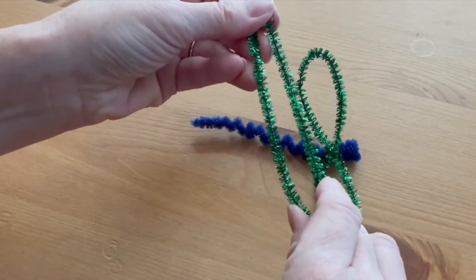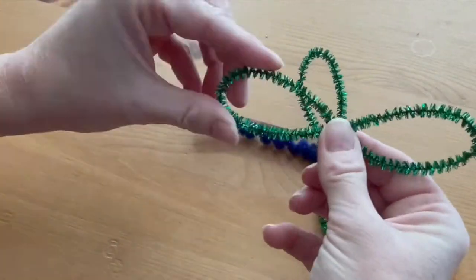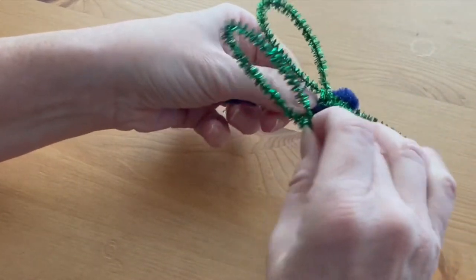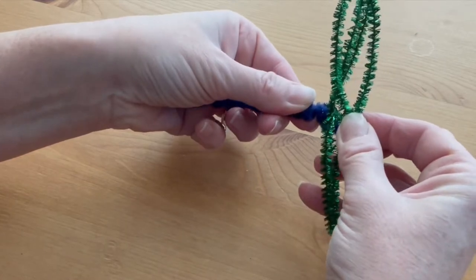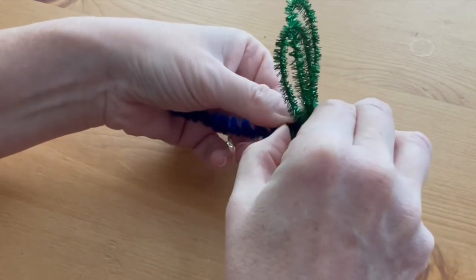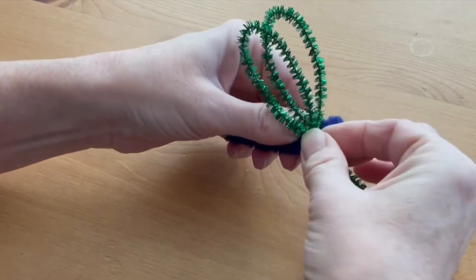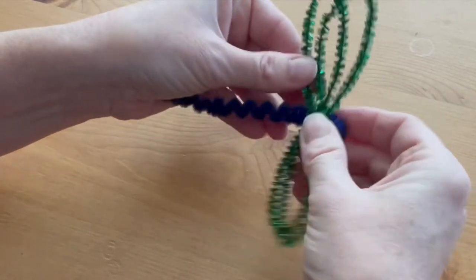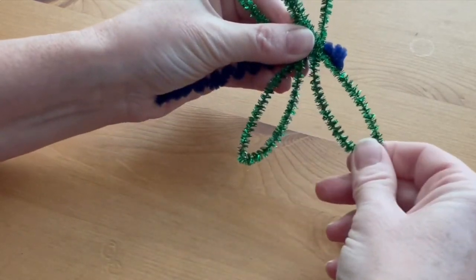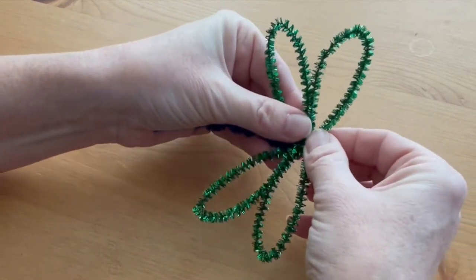Attach the second set of wings to the body using the very next coil down from the first, so thread it through and then bend it up to keep the wings in place. Now you want to arrange the wings so that they're very close to each other but not overlapping.